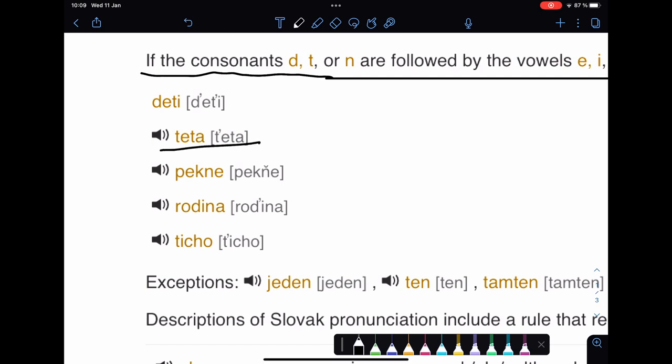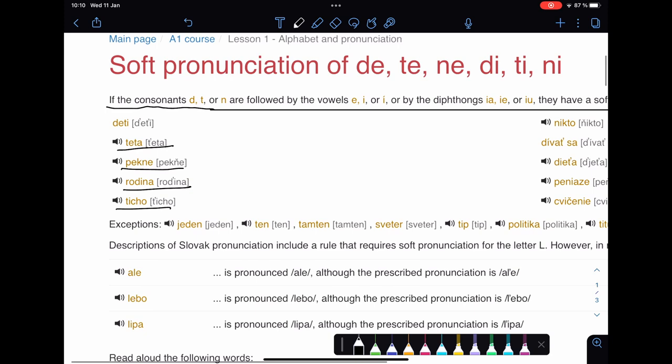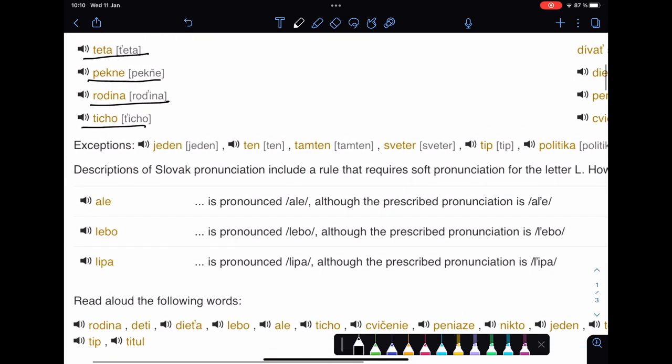So we are going to pronounce this one as četa, pekne, rodina, ticho - not ticho, not rodina, not pekne, but soft. Be careful.